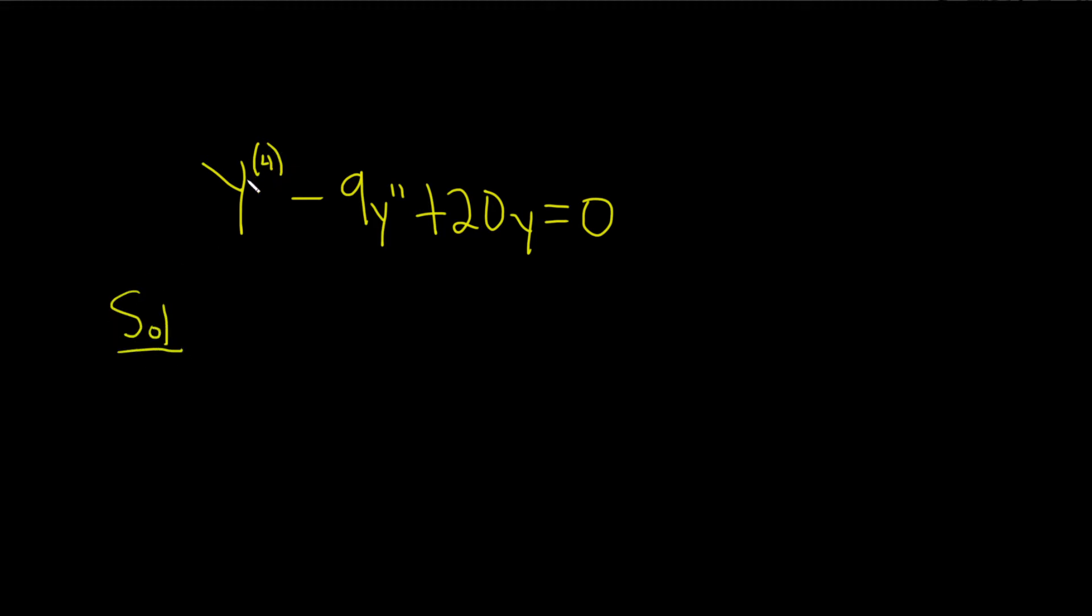So to find it, basically what you do is you match the powers. This is the fourth derivative, so you put an m to the fourth minus. This is the second derivative, so it's an m squared, plus. And then y is the zero of the derivative, so it's just 20. And this is equal to 0.